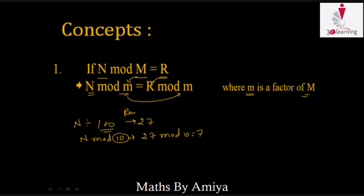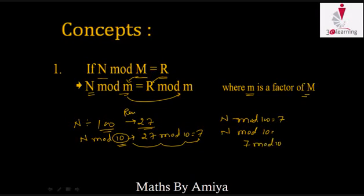So we can say: if the old remainder is more than the new divisor, we have to divide the number. For the same quotient, when N divided by 100 gives remainder 7, what would be the remainder when N is divided by 10? By the same concept, 7 divided by 10 is nothing but 7. If the old remainder is less than the new divisor, the old remainder would be the required remainder.